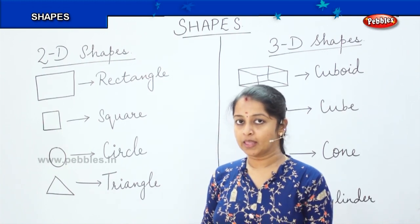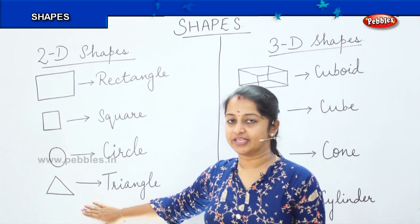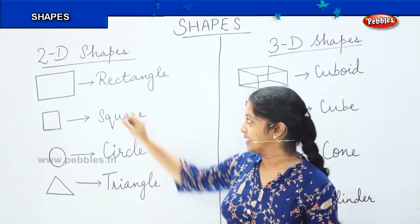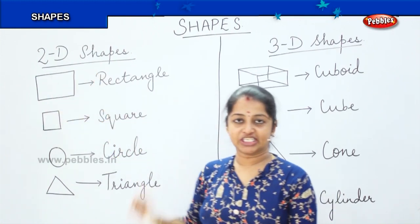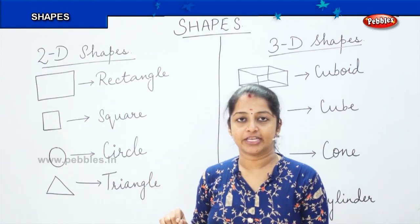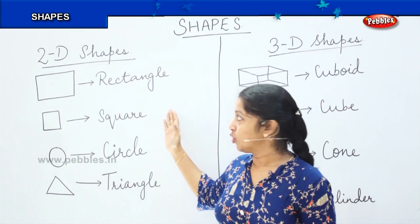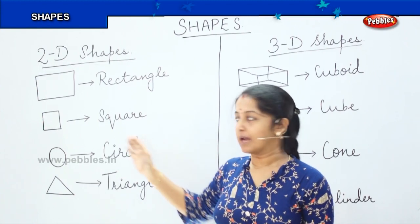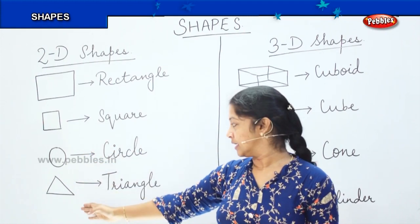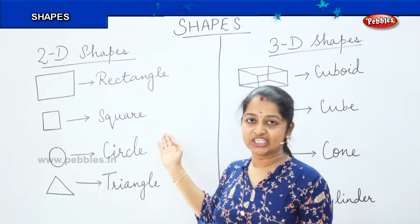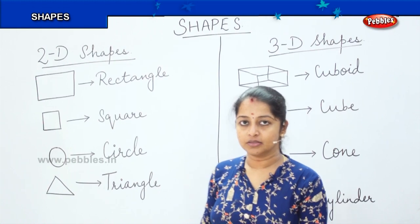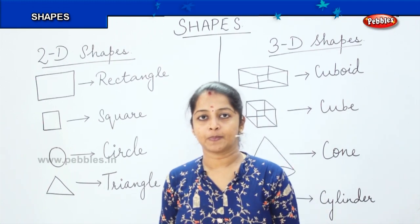And why are these shapes called as 2D shape? Can you tell me? Because it is drawn on a flat surface. Can you see anywhere any shapes bulging out? No. It is drawn with a clean flat shape. So those shapes which are drawn on the flat surface, they are called as 2D shapes. And the examples of 2D shapes can be rectangle, square, circle and a triangle. These are the basic shapes with which we form the 3D shapes. Is it clear? So are you clear with the 2D shapes?